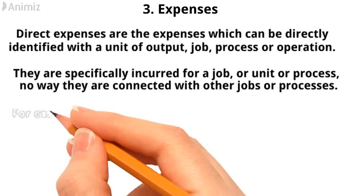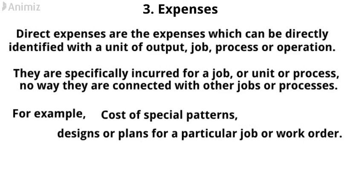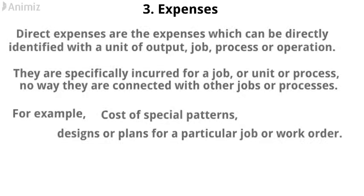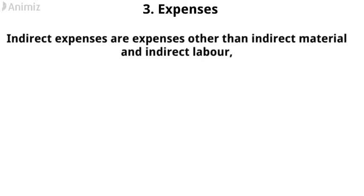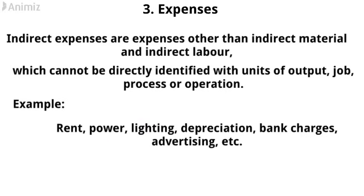For example, the cost of special patterns, designs, or plans for a particular job or work order. Indirect expenses are expenses other than indirect material and indirect labor, which cannot be directly identified with units of output, job, process, or operation. These expenses are incurred commonly for jobs and processes. For example, rent, power, lighting, depreciation, bank charges, advertising, etc.